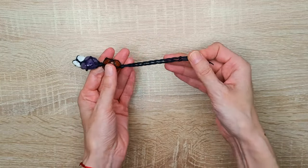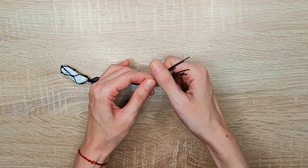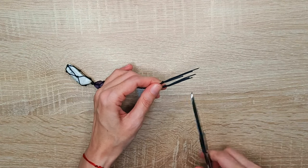We will cut the excess cord, burn the edges because we don't want them to fray and the knots to be secure.